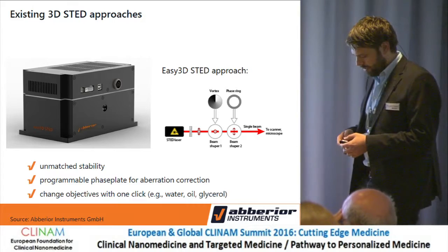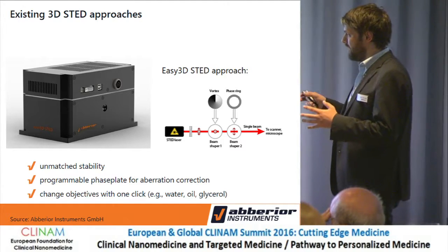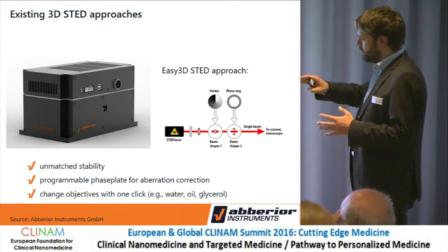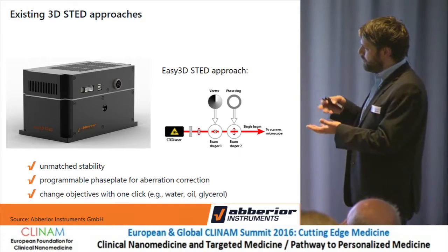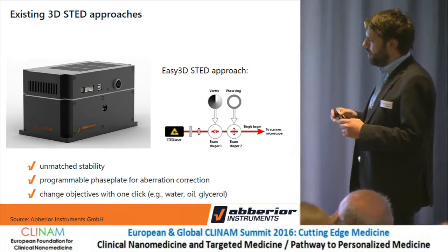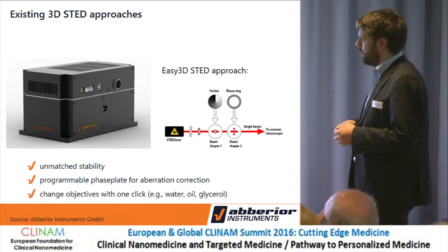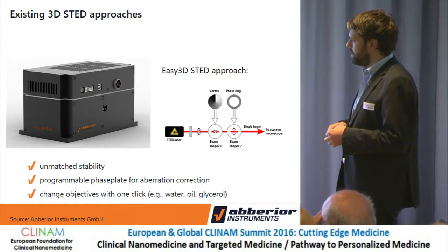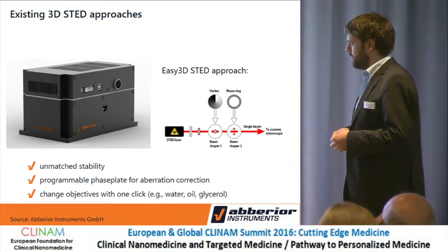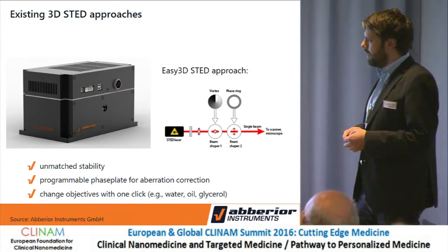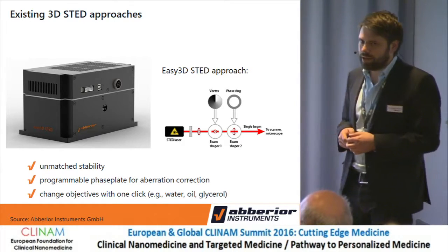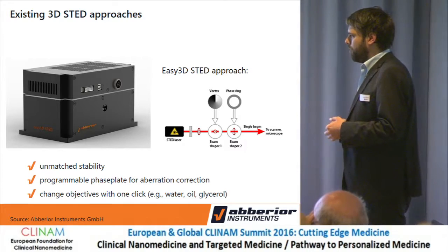This is of course very alignment sensitive. Instead, we use a single beam. We prepare a polarization state that can be rotated at will. One polarization is imprinted the donut, and the other polarization is made the bottle beam, without ever dividing those two beams. So there is no chance for any misalignment — we have unmatched stability. And we can program this spatial light modulator to correct aberrations. Importantly, with this programmable phase plate, you can use any objective lens for the 3D imaging.